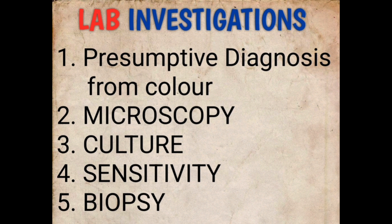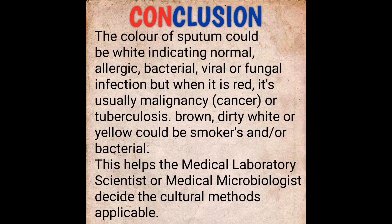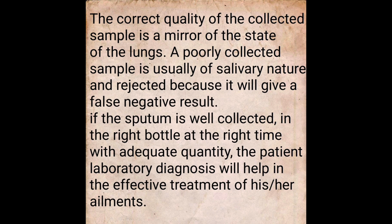In conclusion, the color of sputum provides important clues. White indicates normal or possibly allergic, bacterial, or fungal infection. Red or blood-streaked sputum is usually associated with malignant cancer or advanced tuberculosis, where the disease has eaten deep into the lungs. Brown, dirty white, or yellow sputum could indicate smokers or bacterial infection. This helps medical laboratory scientists and medical microbiologists decide the appropriate culture methods.